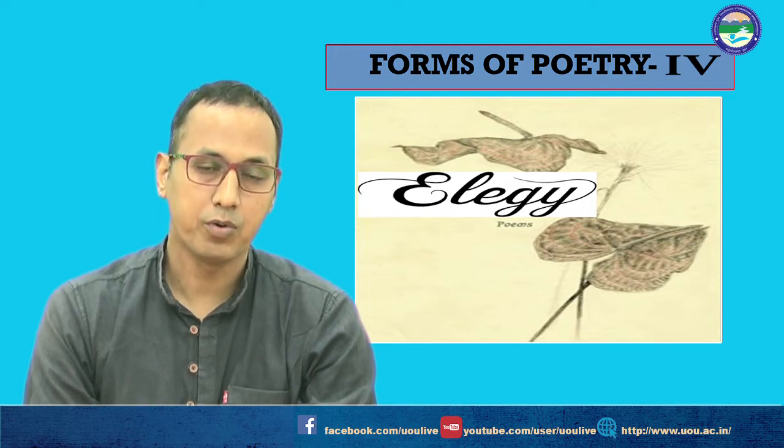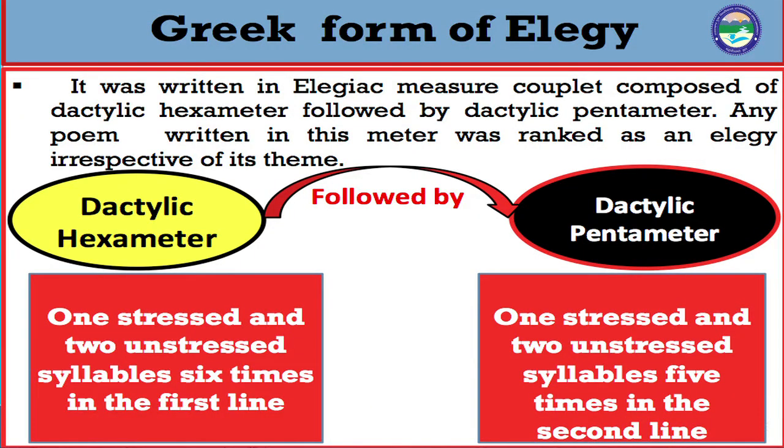The entire focus was on the form of poetry rather than the subject matter. For those who are not clear about dactylic hexameter and dactylic pentameter: one stressed and two unstressed syllables repeated six times in the first line is dactylic hexameter, and one stressed and two unstressed syllables repeated five times in the second line is dactylic pentameter.